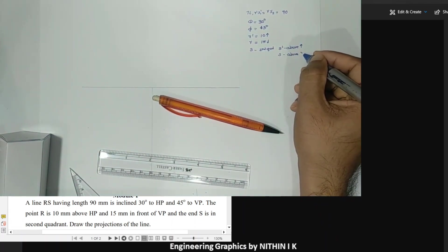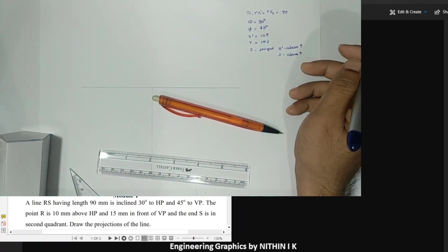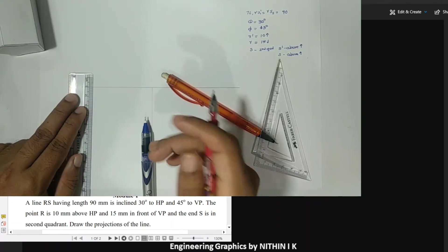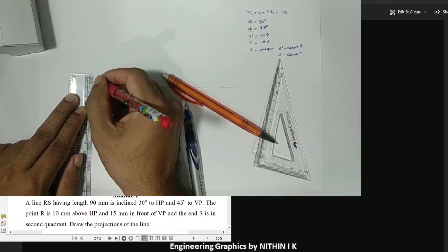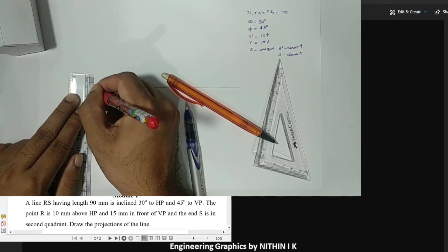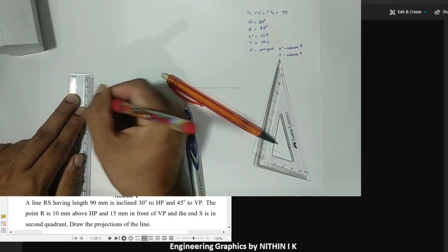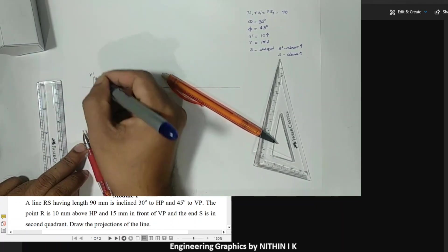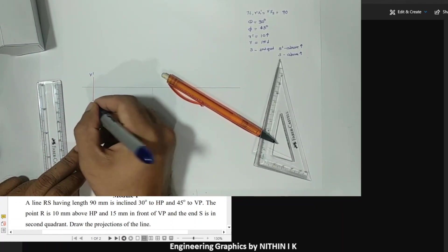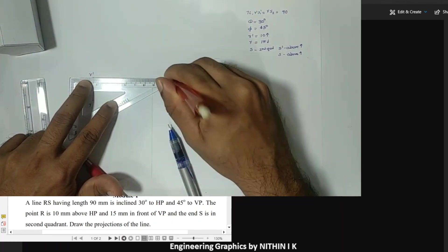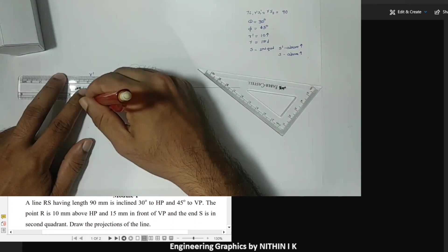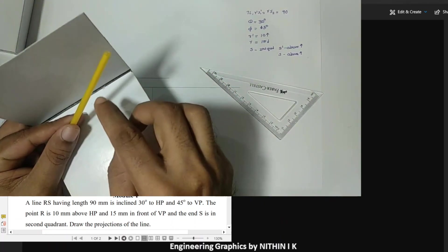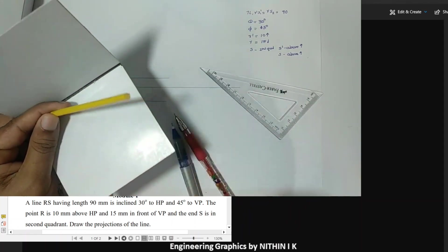Just note that for any problem, given data should be noted with speed and accuracy. R' is 10mm above and R is 15mm below the XY line, and the positions of R' and R are now located.